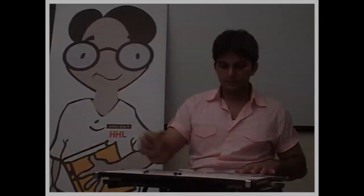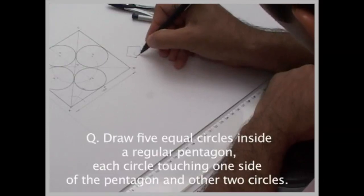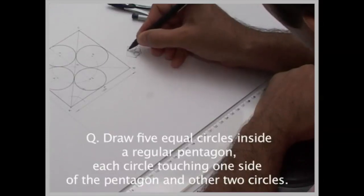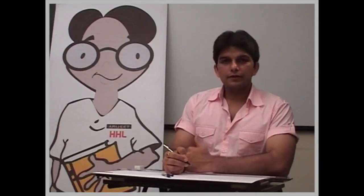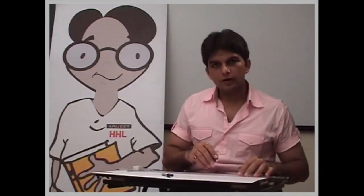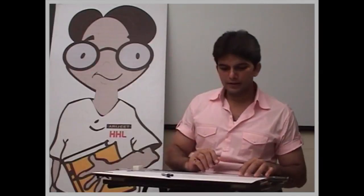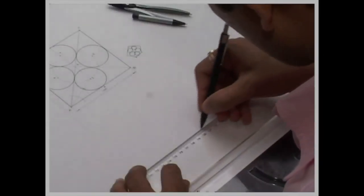Now same method we can follow in pentagon and hexagon as well. Now we will draw a pentagon and in that pentagon, we will draw five equal circles touching one side and other two circles. Now for pentagon, we have one method that is called the general method. Now we will draw a pentagon with a different method, that is called the 72 degree method. I think most of the people are familiar with this method.